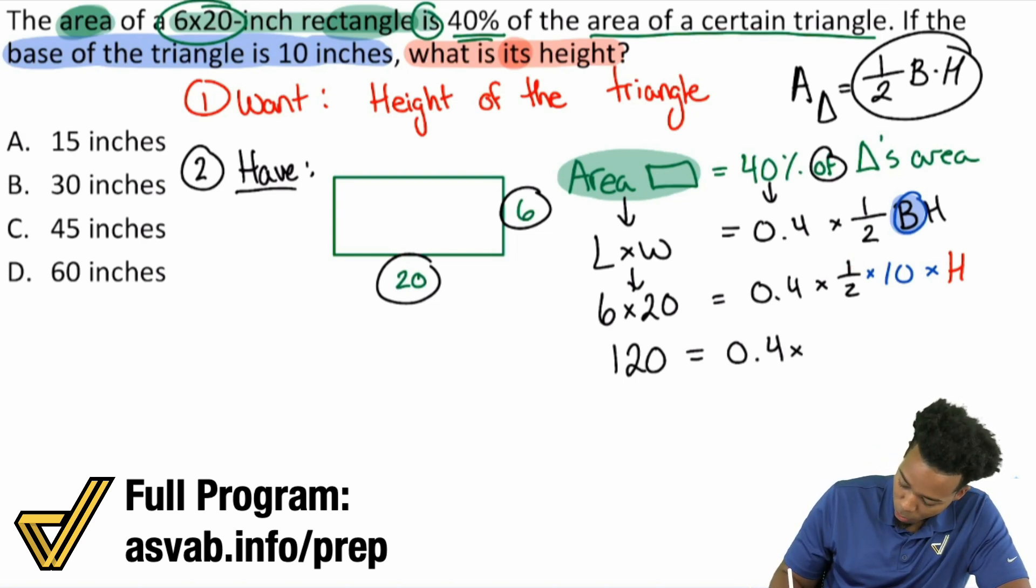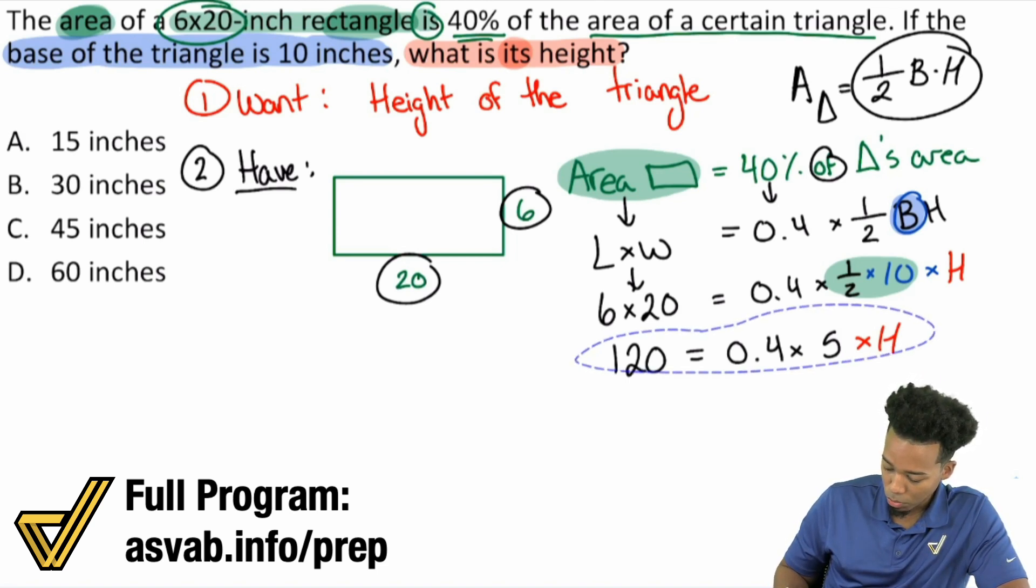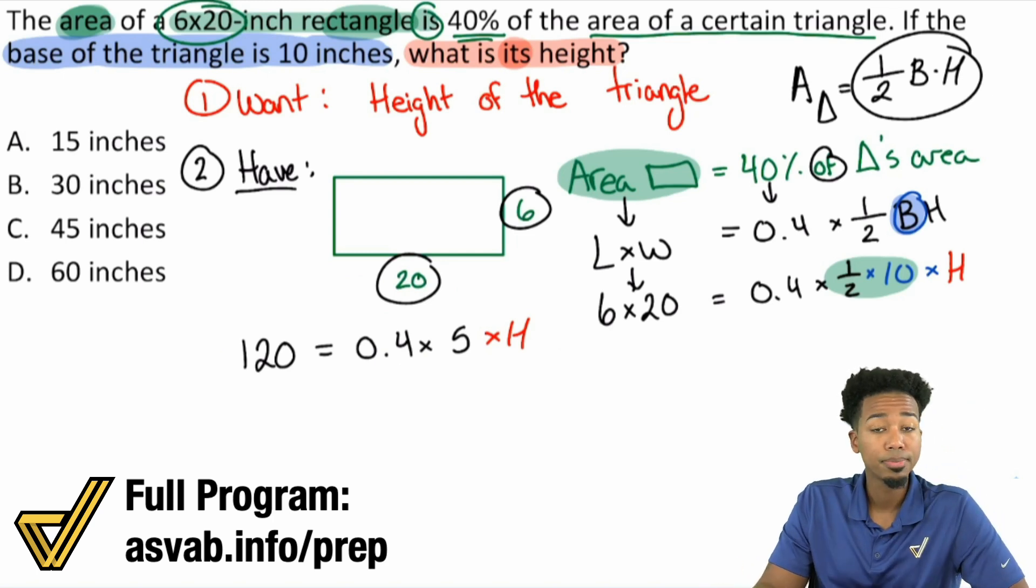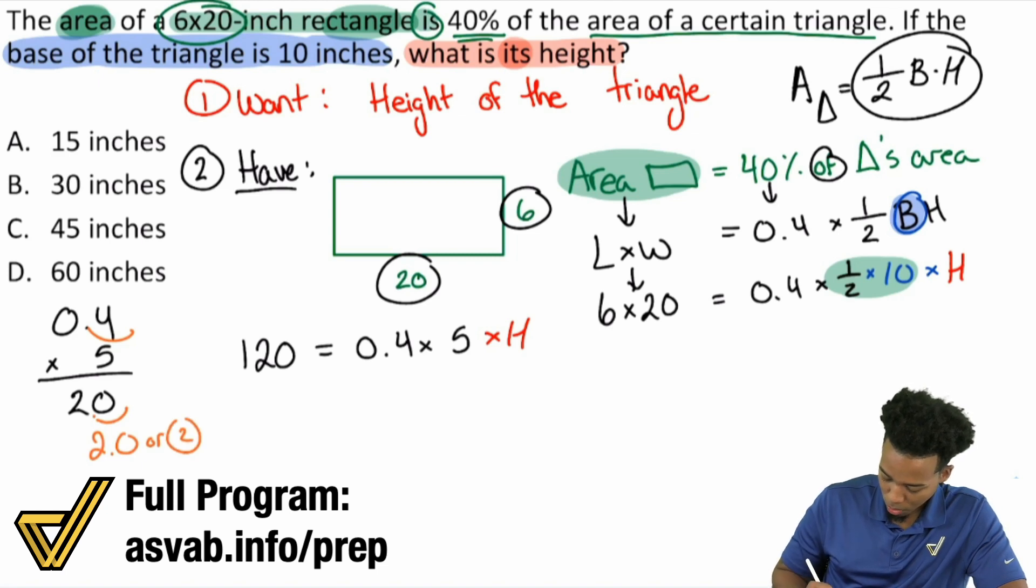So 0.4 times 5. Let me take this information and move it over here. 0.4 times 5, that's going to be 2, because 4 times 5 is 20 and we have one decimal that we have to move back. So it goes from 20 to 2. We have 120 equals 2 times h. We're going to divide both sides by 2, and we will get h equals 60. And boom.